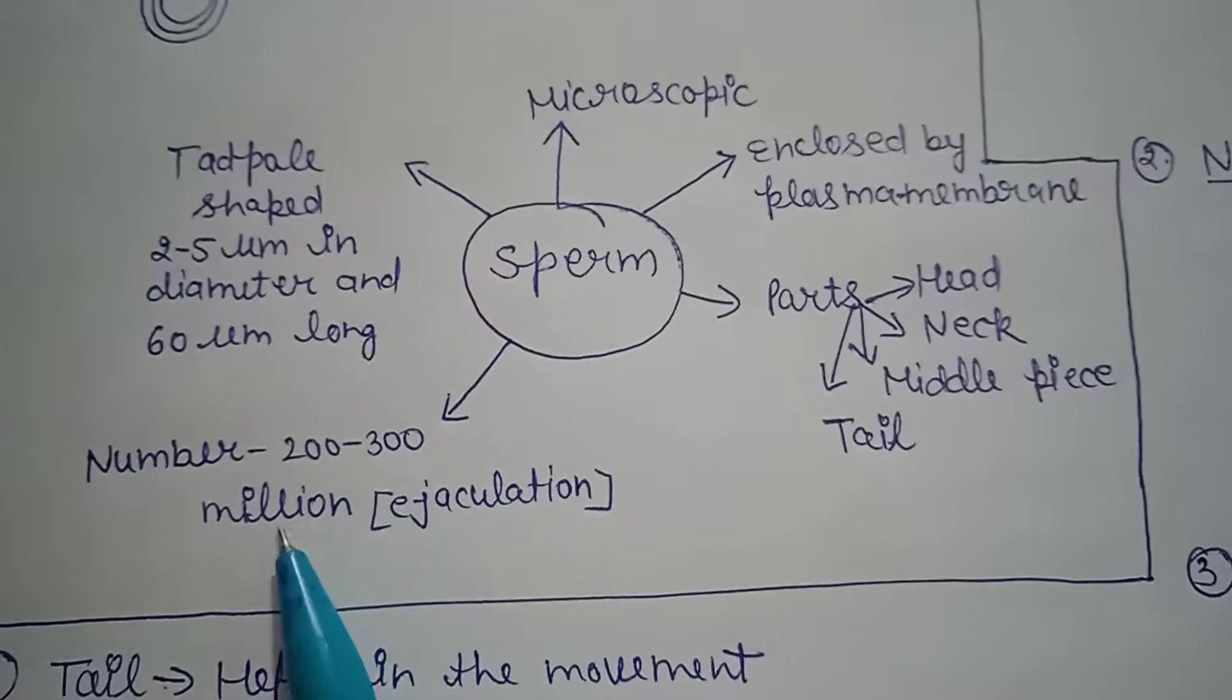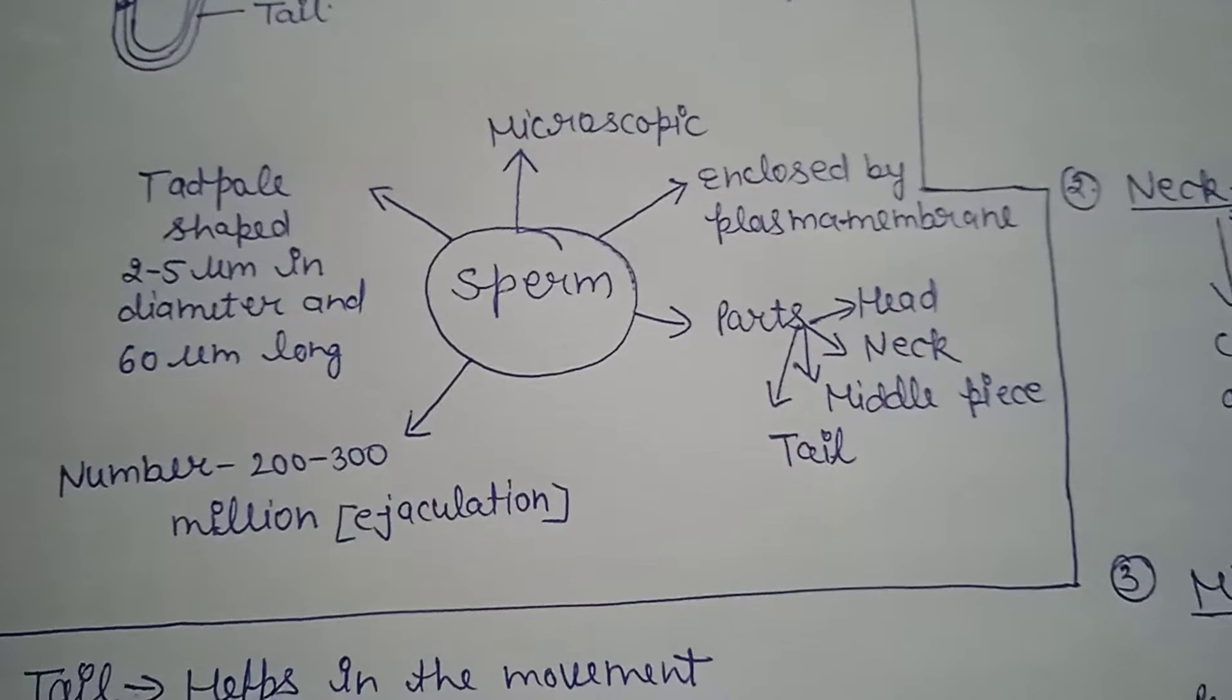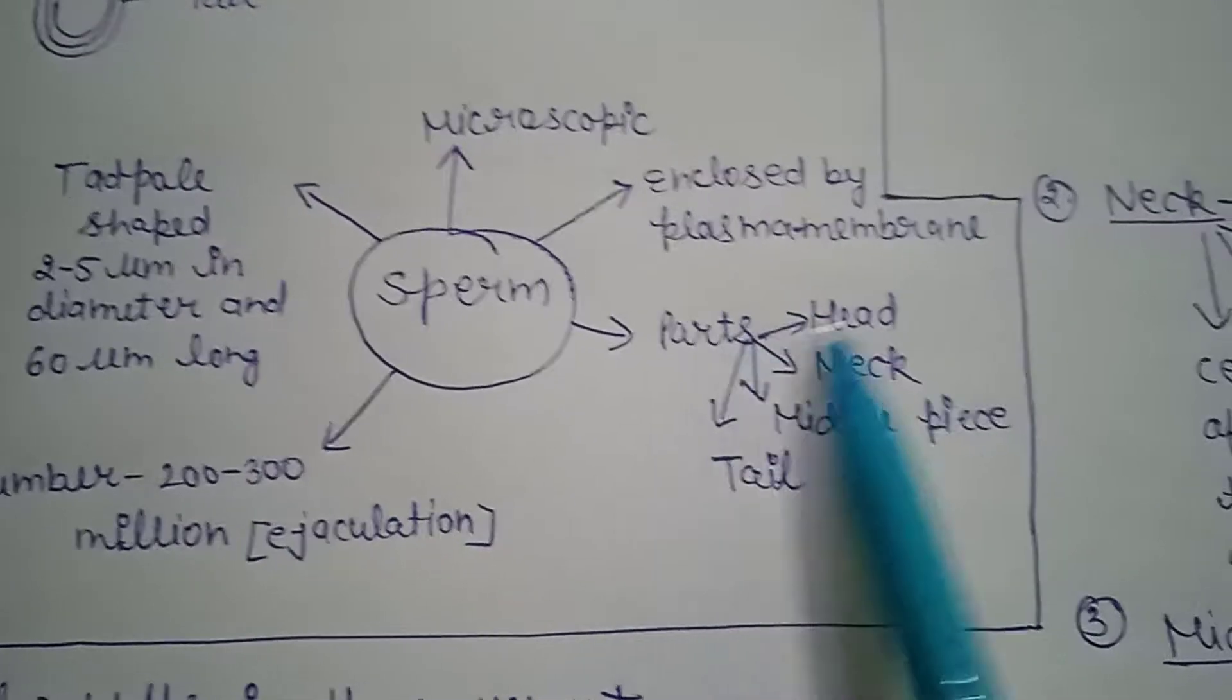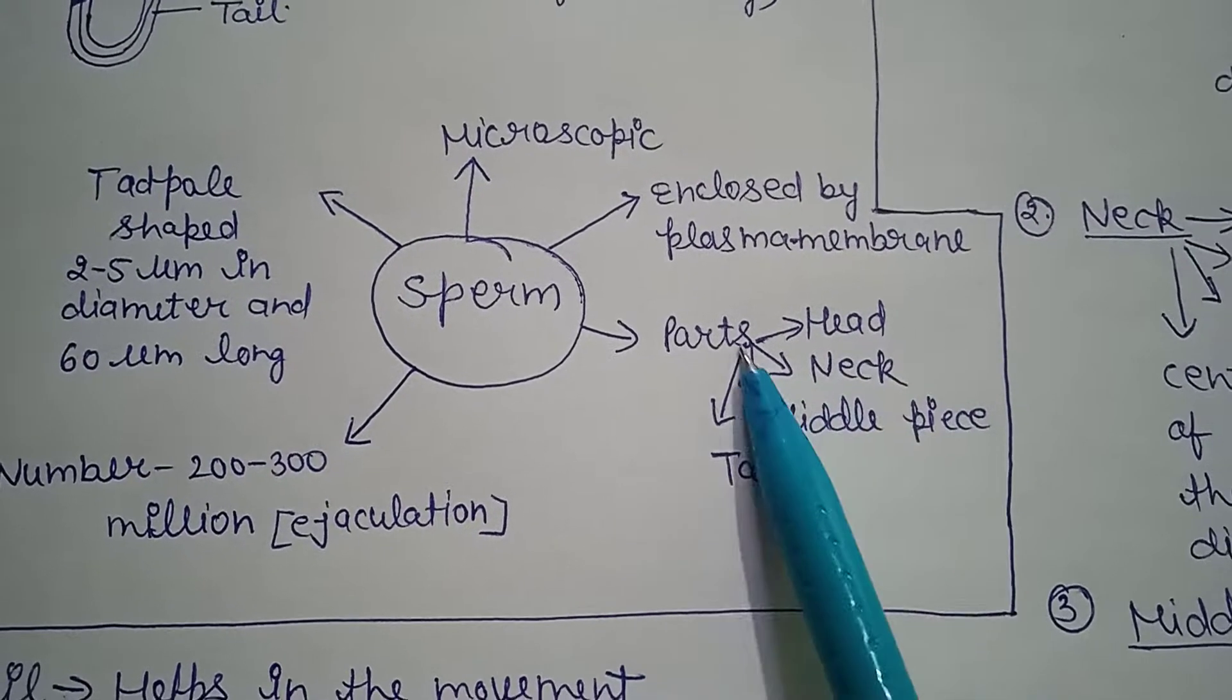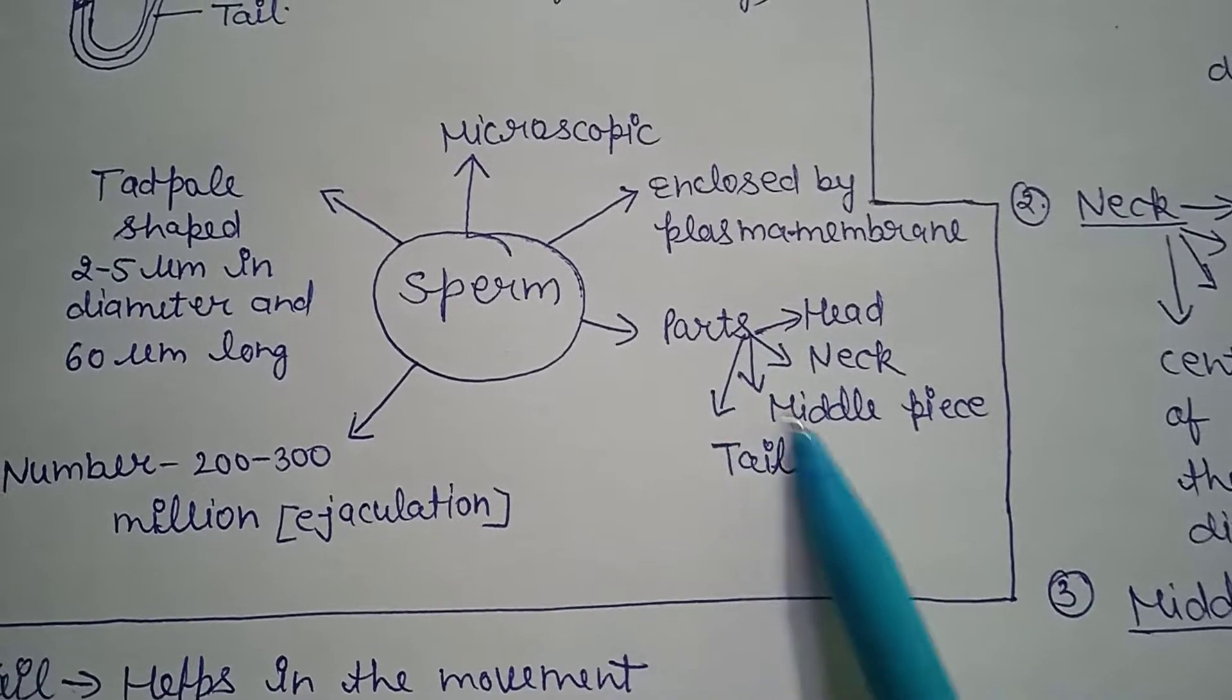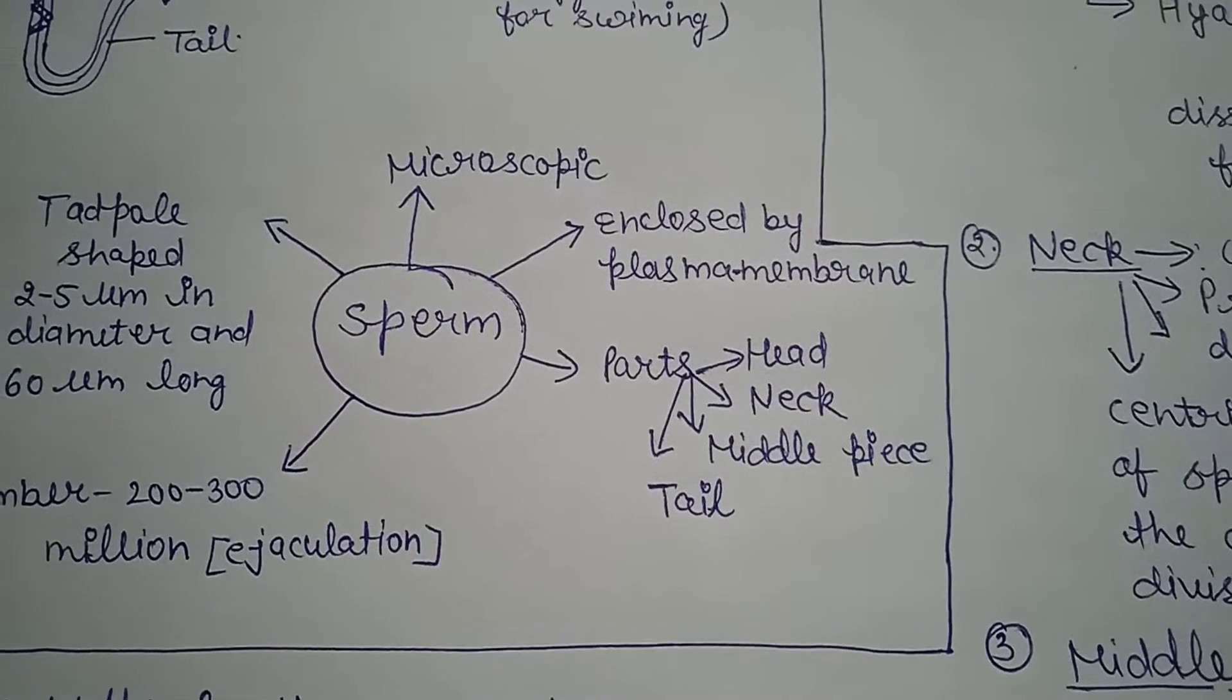Now we talk about the parts of sperm. The first one is head, I already showed you in the diagram. Next part is neck, next is middle piece, and last is tail. Now I am going to discuss in detail the structure of sperm.